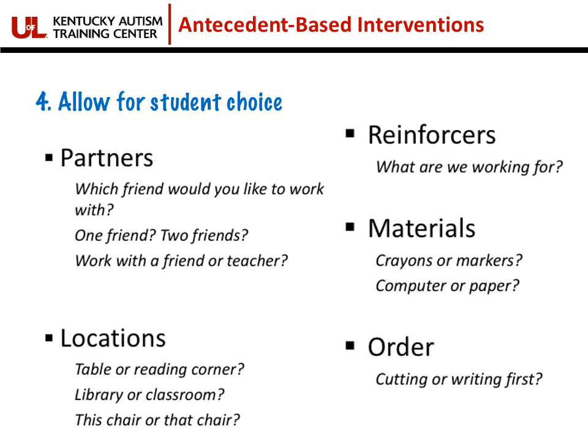The next antecedent-based intervention is allowing for student choice, and I cannot stress how important and easy this is to incorporate throughout your school day. I'll also admit that I was a self-proclaimed control-freak teacher and had a difficult time letting go of certain aspects. But this is not about allowing students free reign — these are still teacher-controlled choices. Often it's presenting two or three options in the moment that you as a teacher are okay with. Sometimes it's simply asking: do you want to work alone or with a friend?